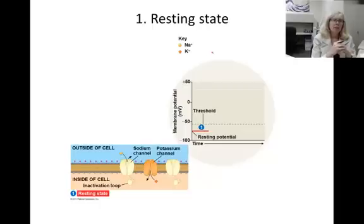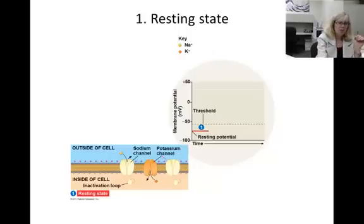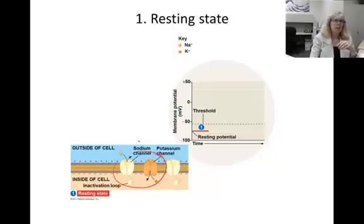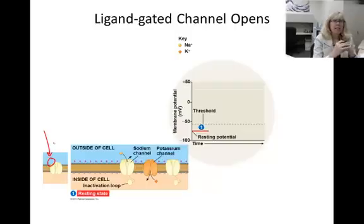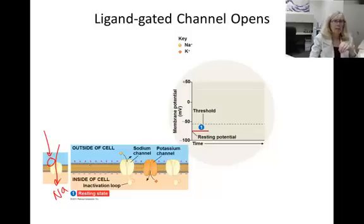Now let's follow the phases of an action potential. When the membrane is at its resting potential, all of these channels are closed and the membrane is at its normal minus 70 millivolts. If a neurotransmitter comes and binds to the ligand-gated channel, causes it to open, and sodium rushes in, this causes the membrane to become less negative inside, to about minus 50 millivolts.